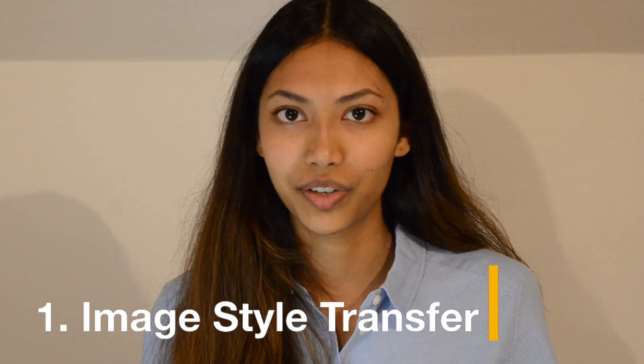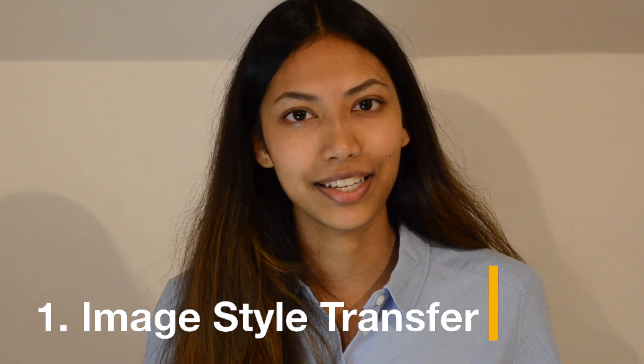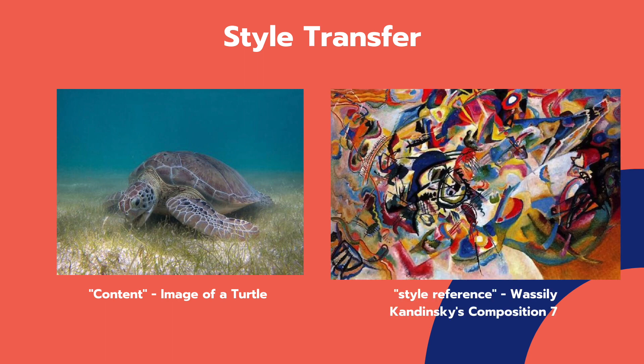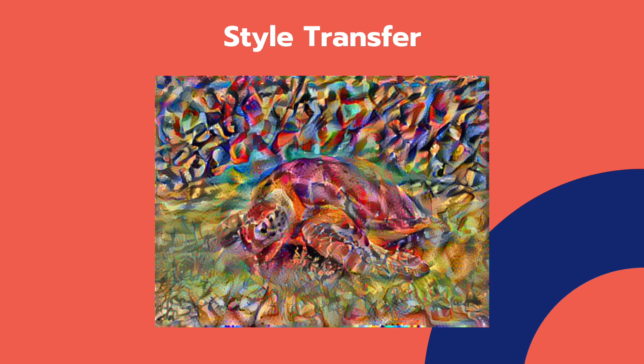The last computer vision application is image style transfer. Image style transfer is essentially taking two images and blending them together to produce one. It is used in so many ways, especially in computer graphics and media. Style transfer uses two images: the first is the content image and the second is the style reference image. It blends them together so that the output image looks like the content image but painted in the style of the reference image.